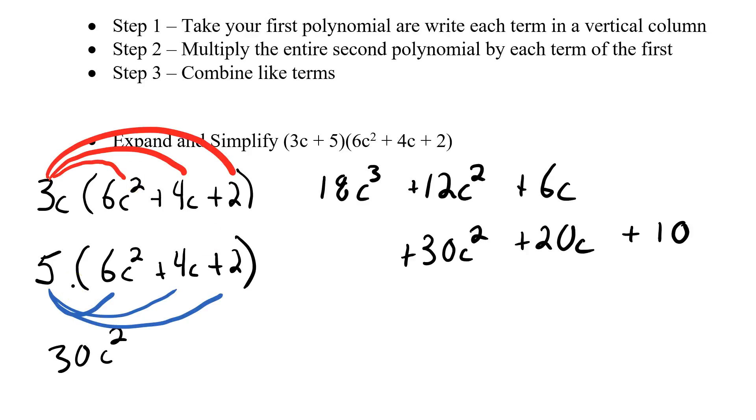So I don't have anything more to multiply. All I can do is combine my like terms. I've got 18c to the third, didn't combine with anything. I've got 12 and 30 gives me 42c squared. I've got 6 and 20 which gives me positive 26c. And then I've got 10. Nothing else can be combined. I've multiplied it through. So I've got 1, 2, 3, 4. I've got a 4 term polynomial here.